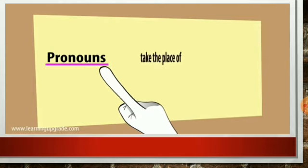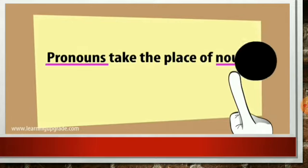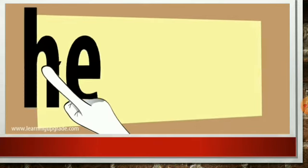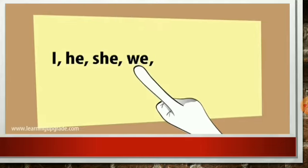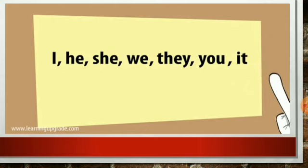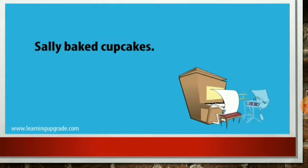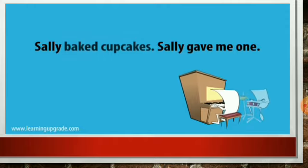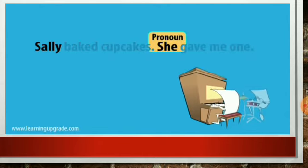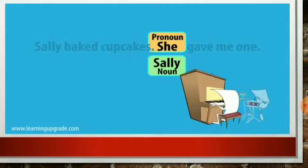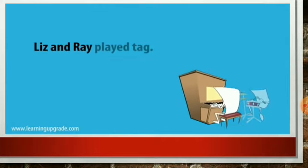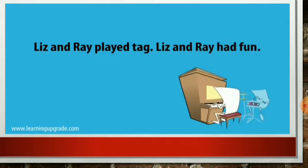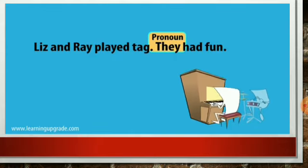Pronouns take the place of nouns. I, he, she, we, they, you, it. Sally baked cupcakes — Sally gave me one. Sally baked cupcakes — she gave me one. The pronoun 'she' takes the place of the noun 'Sally.' Liz and Ray play tag — Liz and Ray had fun. Liz and Ray play tag — they had fun. The pronoun 'they' takes the place of the nouns Liz and Ray.